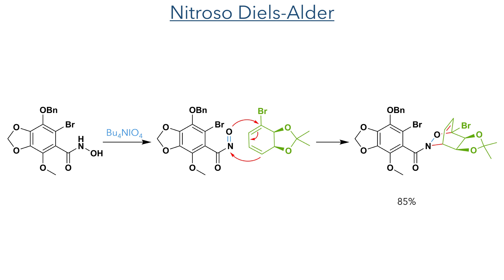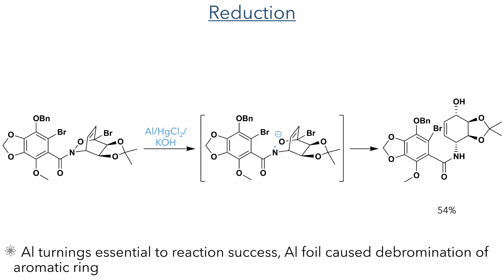In this nitroso Diels-Alder reaction, the hydroxamic acid is first oxidised to a nitrosyl group using tetrabutylammonium periodate, and this is reacted in situ with the bromodiene, producing the cycloadduct as a single isomer in 85% yield. This cycloaddition sets up the necessary 1,4 relationship between the amide and the hydroxyl group, which is achieved by a reduction using aluminium turnings together with mercuric chloride and potassium hydroxide. This reduces the N-O bond and breaks open the oxazine ring, together with the selective debromination of the cyclohexene ring without affecting the brominated aryl ring. The reaction required significant optimisation — aluminium turnings were essential, as aluminium foil also debrominated the aryl ring and only returned traces of the desired product.